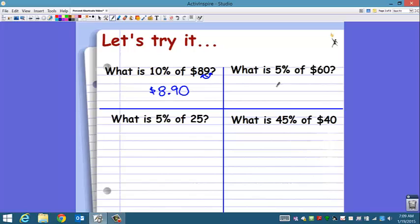What is 5%? 5% of 60? We've learned 10%. How can we find 5%? Well, how do you go from 10% to 5%? Divide it by 2. Cut it in half.